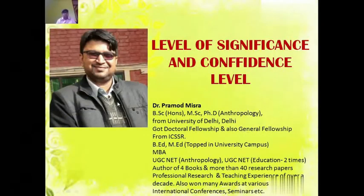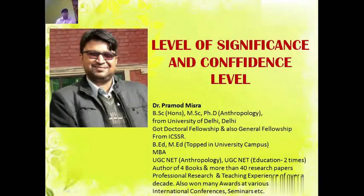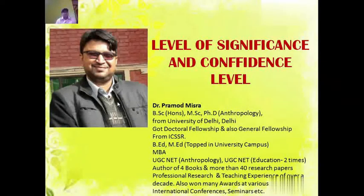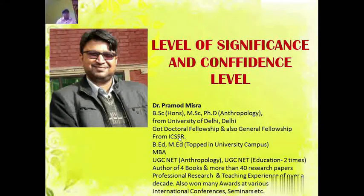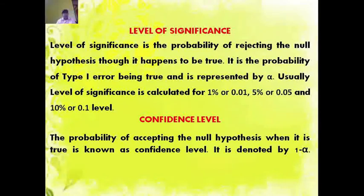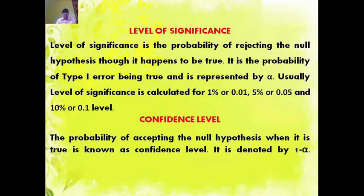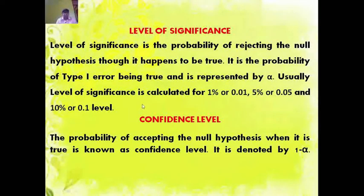Hello friends, today we will discuss the concept of level of significance and confidence level. Level of significance is the probability of rejecting the null hypothesis, though it happens to be true. It is the probability of type 1 error being true and is represented by alpha.